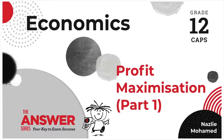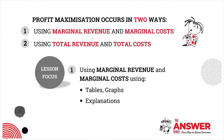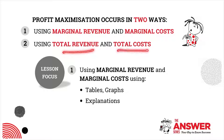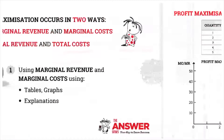Hello Matrix and welcome to our series of videos on the perfect market. There are two ways in which profit maximization occurs: using marginal revenue and marginal costs, or alternatively using total revenue and total costs. Today's lesson focuses specifically on marginal revenue and marginal costs using tables, graphs and explanations.